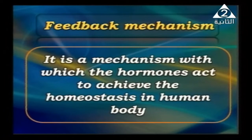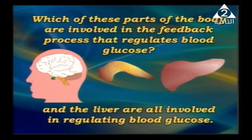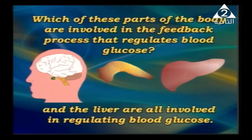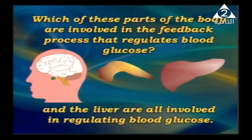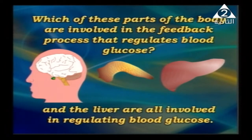Which parts of the body are involved in the feedback process that regulates blood glucose? We have the pituitary gland under the brain, the pancreas, and the liver. These three parts work together in harmony to regulate the level of blood glucose — decreasing or increasing it according to the activity needed by the body.